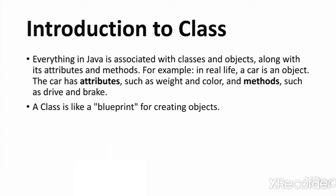So, the car has attributes like weight, color, model, company, manufacturer, etc. And the methods like drive and brake. Here, the methods are nothing but the behavior of an object.